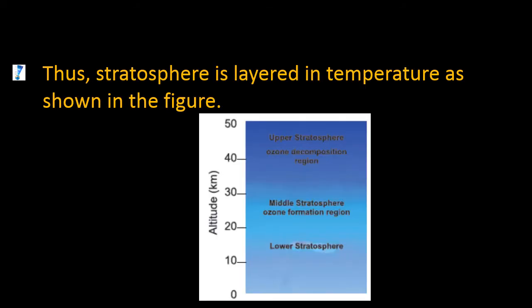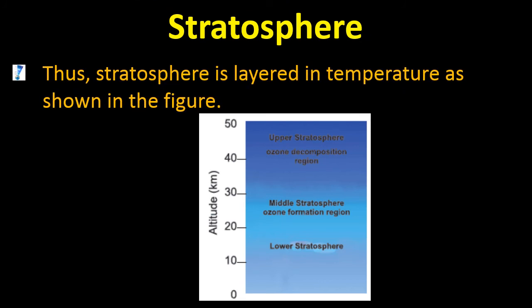How does ozone formation take place in the stratosphere? The lower stratosphere lies between 10 to 20 km. The middle stratosphere, from 20 to 30 km, is the ozone formation region. In the upper stratosphere, ozone decomposes and gives back the reactants, and then in the middle layer the reactants recombine to give the product.